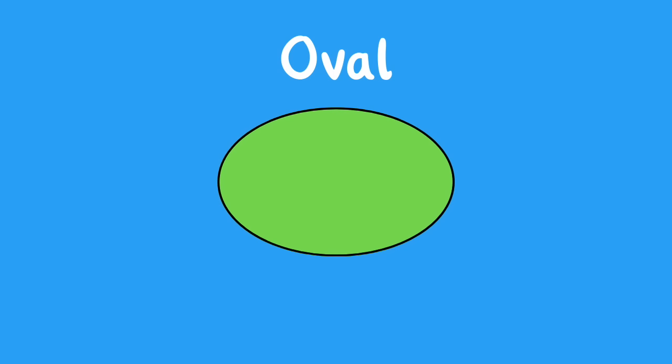Oval. Ovals only have one side and no corners.